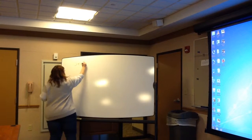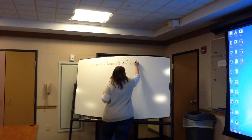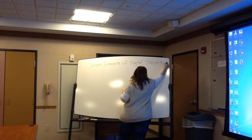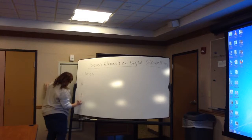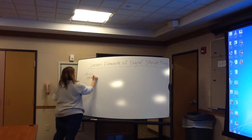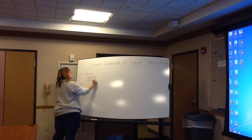Does anybody remember what the seven elements of digital storytelling are? Just shout them out. Voice. Excellent. And voice is — can someone describe what voice means in terms of digital storytelling? Like the pacing and the quality of the sound. Quality of sound, so the quality of the voice — how loud, how clear — but also the pacing. You don't want the voice to be too loud or too quiet.